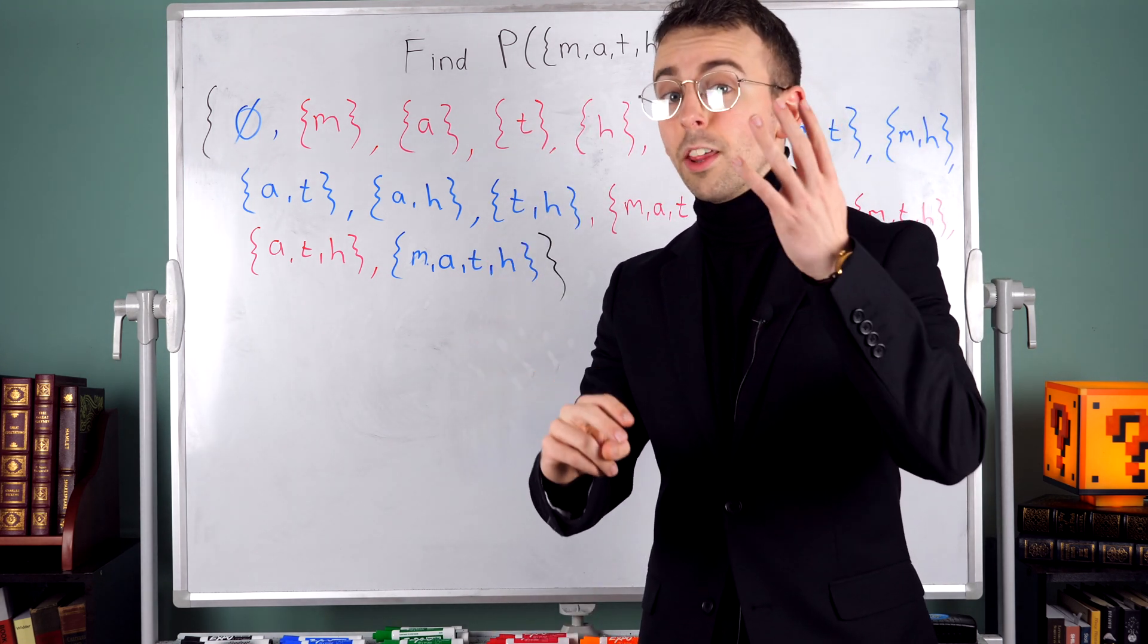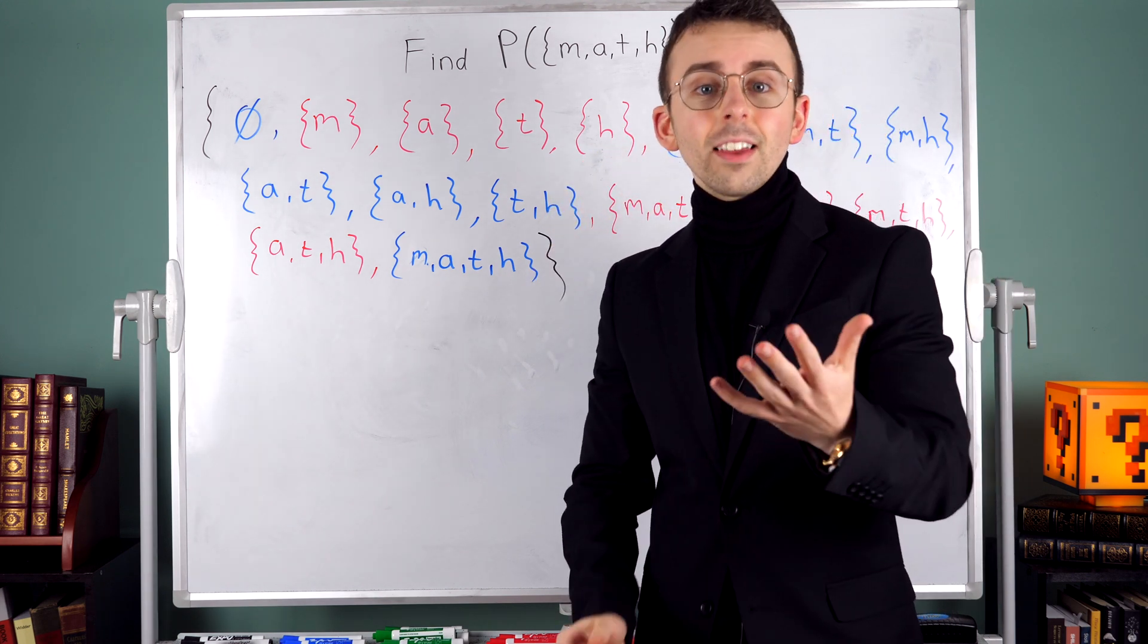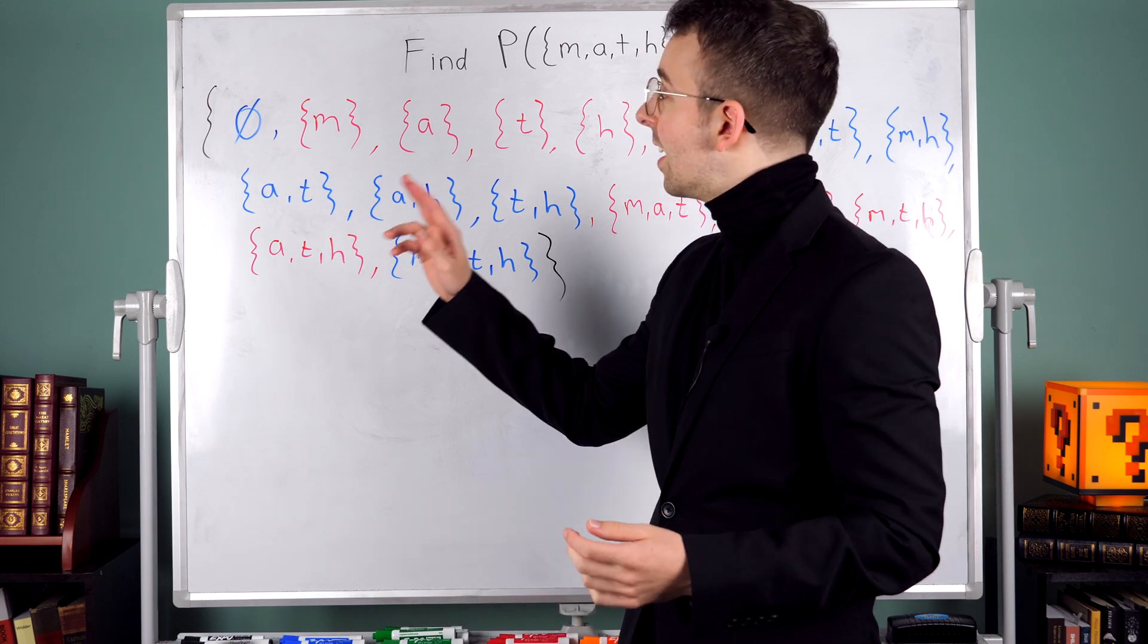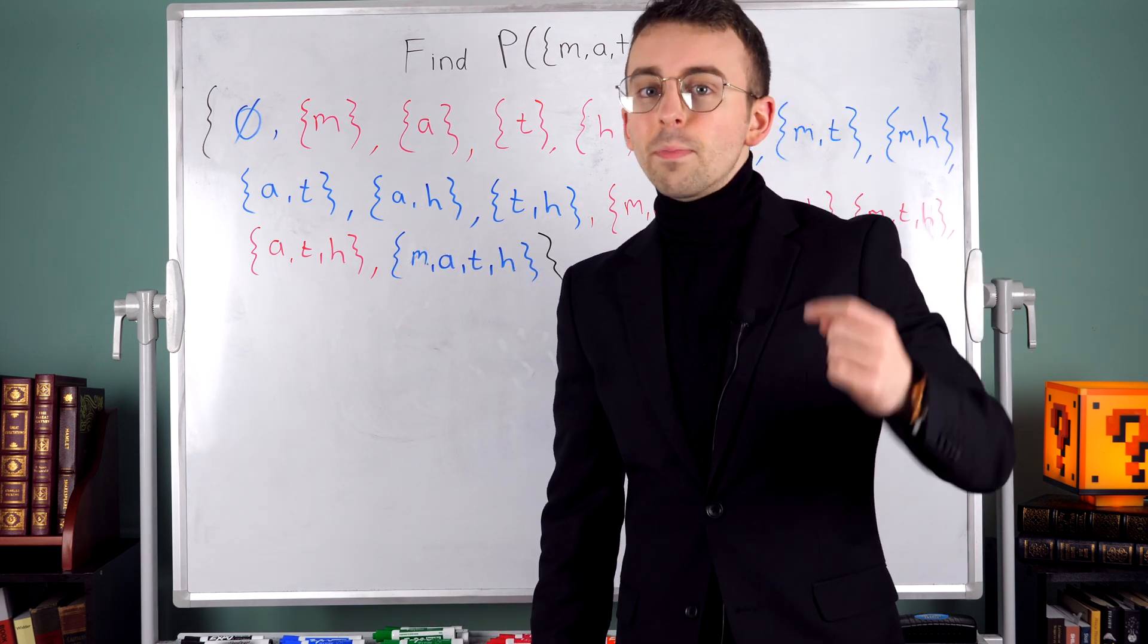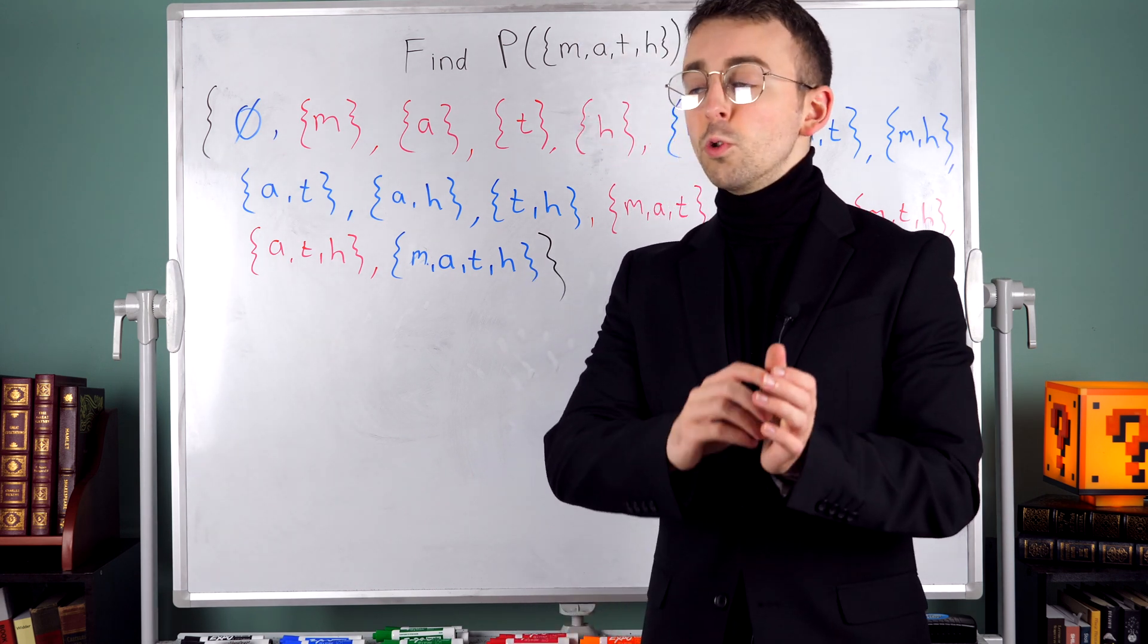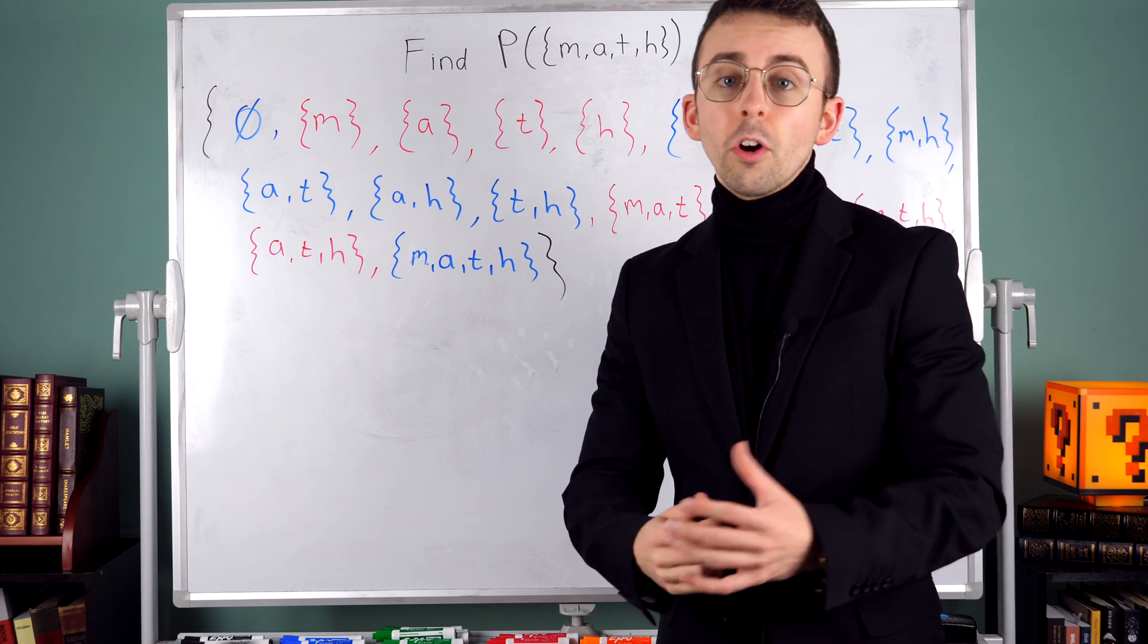Then 2 to the power of that number of elements tells us how many subsets there are, which is the number of elements in the power set, and I'll keep that number in mind as I finish the exercise.